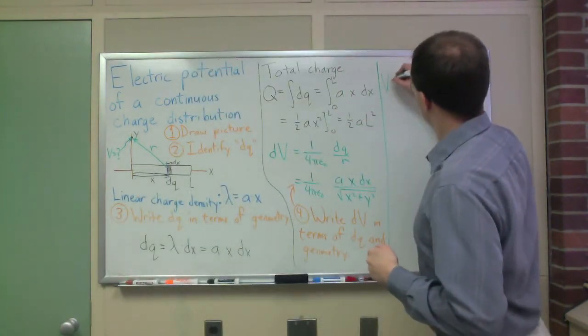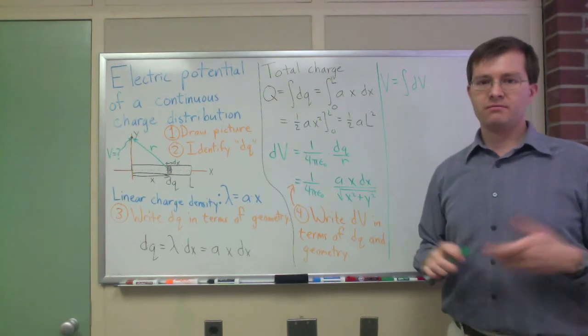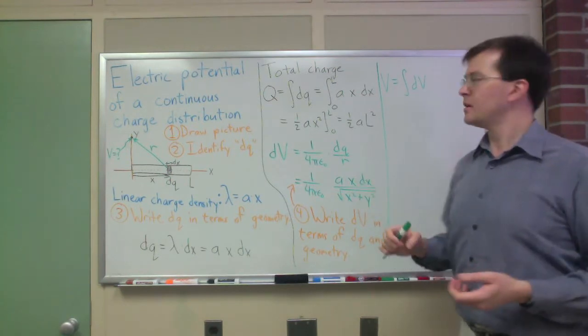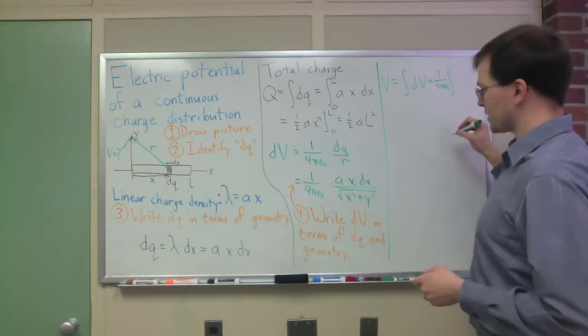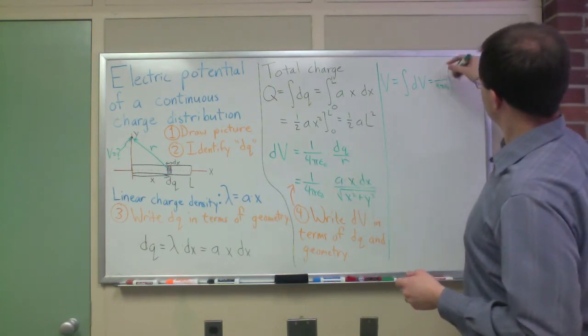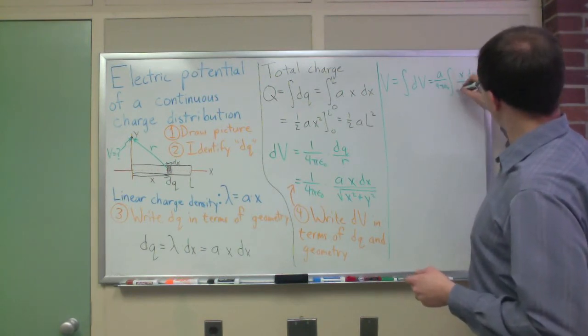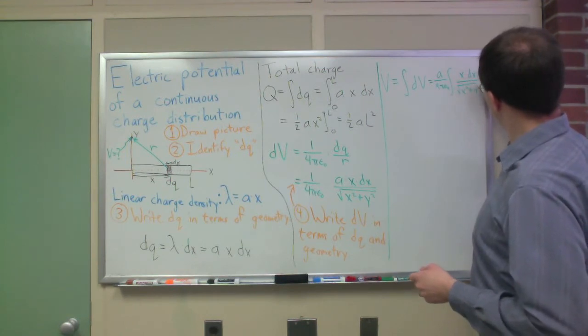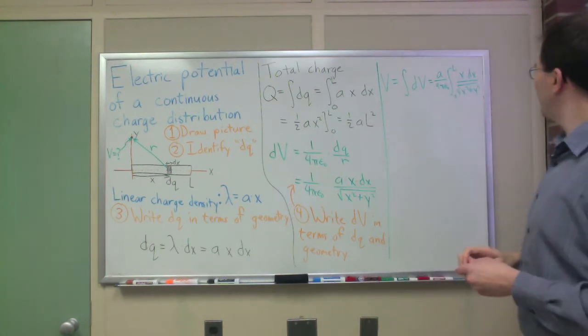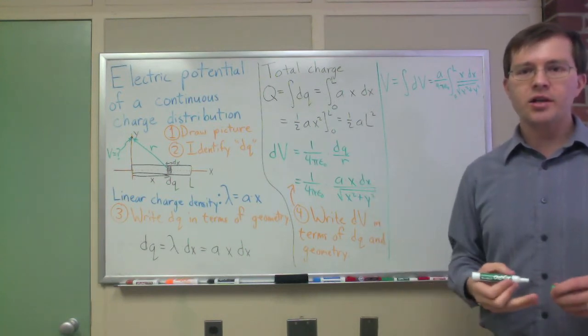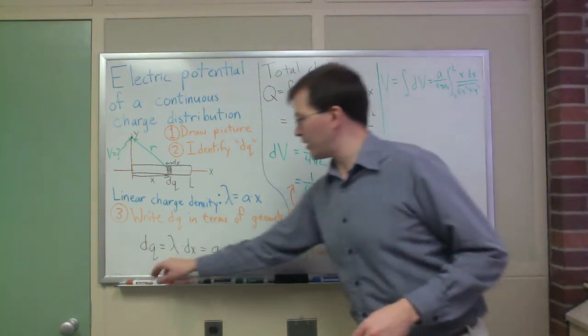Once I've got that, the good news is that to find my total potential, physicist's version of calculus says total potential is just the integral of all the little bits of potential. V equals the integral of all the little dv's. We know what that is now. This is one over four pi epsilon naught, which I'm factoring out because it's a constant, integral of x dx over the square root of x squared plus y squared, going from x equals zero to x equals L.